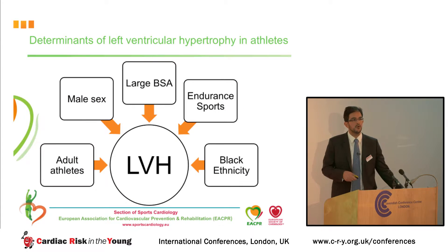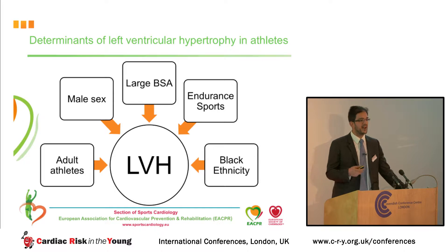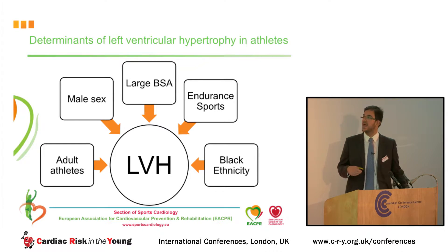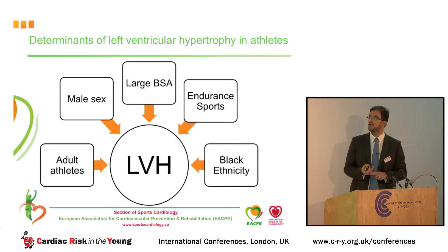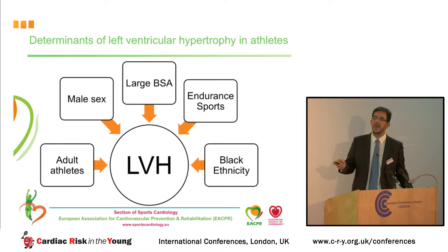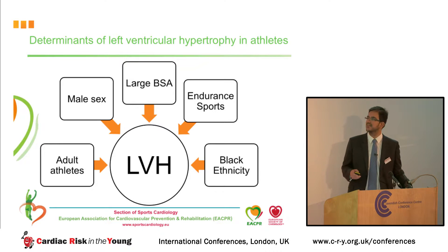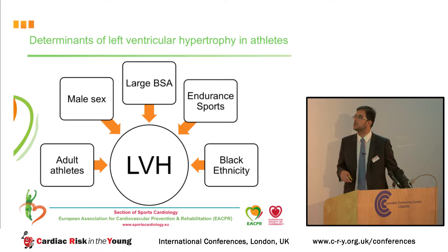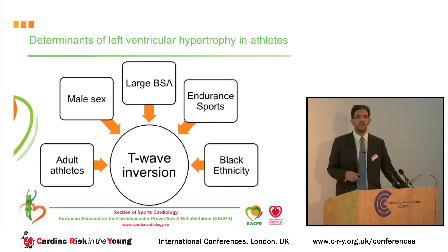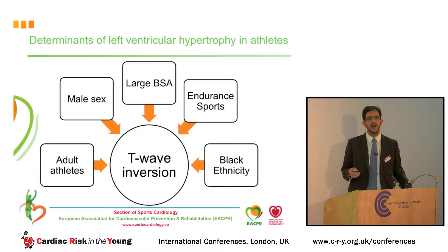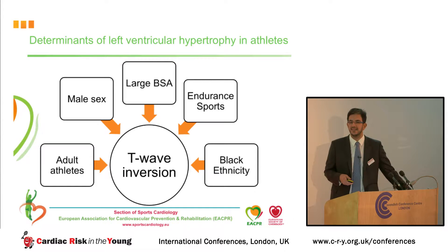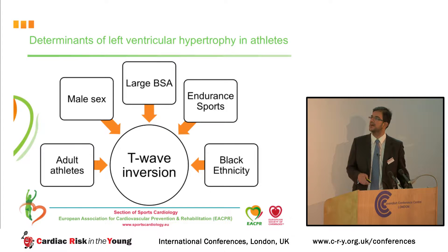Looking at the other side of the coin: exercise induces several cardiac adaptations, one of which is thickening of the left ventricle. The more pronounced effect is seen in adult male athletes with large body surface area competing in endurance sport. As has already been mentioned, there is a pronounced effect of black ethnicity, with black athletes exhibiting significantly more left ventricular hypertrophy compared to white counterparts. Exactly the same factors influence repolarization anomalies on the athlete's ECG, and a proportion will overlap with repolarization abnormalities — in particular T-wave inversions — that are very common findings in hypertrophic cardiomyopathy.